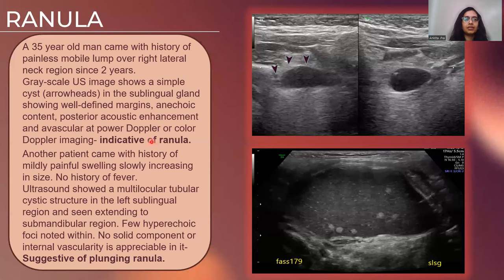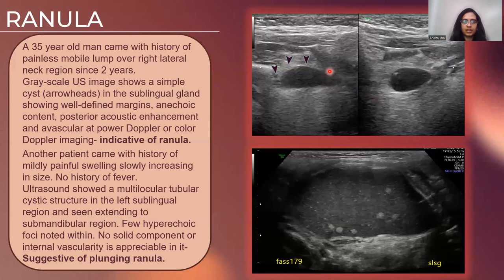Here we have a 35-year-old male patient with a history of painless mobile lump over the right lateral part of the neck since two years. On grayscale ultrasound, we can see a well-defined anechoic avascular lesion showing posterior acoustic enhancement, which is indicative of a ranula.